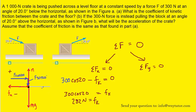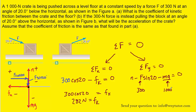Let's turn to the sum of the forces in the y direction. There are a few forces: the upward normal force, which is positive; the downward F sine 20, which is negative; and the downward mg, which is also negative. Note again that F was given as 300, and mg was stated as 1,000 newtons.